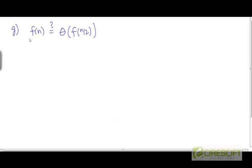Here is the seventh conjecture. f is claimed to be Θ of f(n/2). Is this conjecture valid or is it not valid? You need to prove or disprove this conjecture.